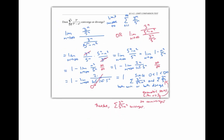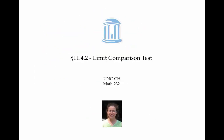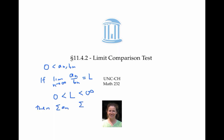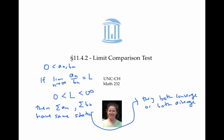That's the limit comparison theorem in action. The limit comparison test tells us that for two series with positive terms, if the limit of the ratio of the terms is some number which is bigger than zero and less than infinity, then the two series have the same convergence status — they either both converge or both diverge. The limit comparison test is especially handy when the ordinary comparison test doesn't seem to work: when we know what we want to compare to, but we can't get the inequality to go the right direction.